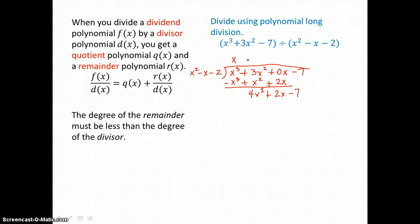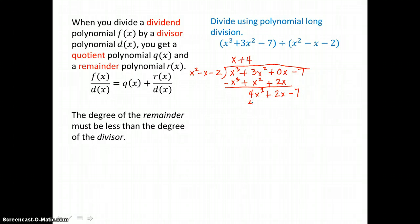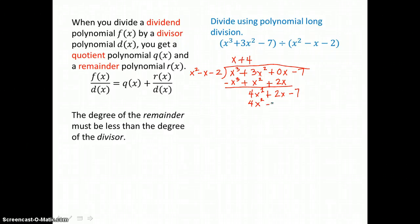Then I go again. What do I multiply by x squared to get 4x squared? That would be positive 4. So I put it up in my quotient and distribute. 4 times x squared is 4x squared. 4 times negative x is negative 4x. And 4 times negative 2 is negative 8.